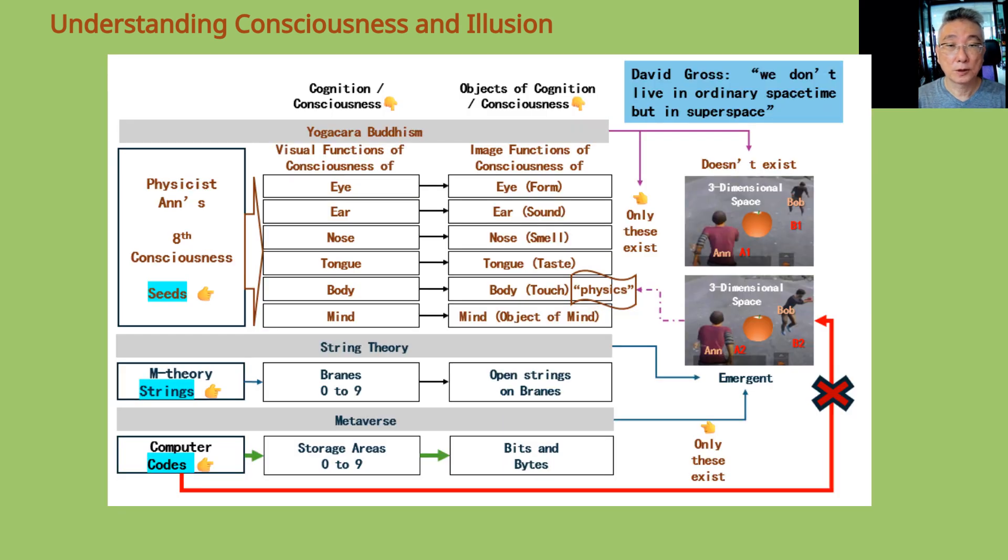Theory, as described by Yogacara Buddhism, is a metaverse-like reality. All our cognitive abilities and our consciousness are not in the three-dimensional space. It is important to note that the objects of cognition are also not in the three-dimensional space.